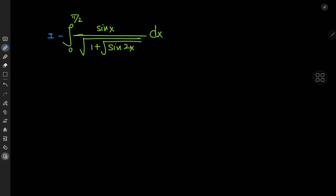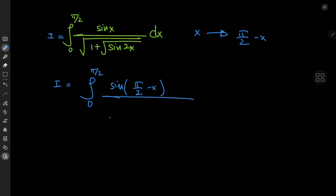I'm going to call the integral I for reference purposes. The phase shift moves from the x world to the π/2 minus x world. So that means I equals the integral from 0 to π/2 of sin(π/2 − x) divided by the square root of 1 plus the square root of sin(2x), since 2 times (π/2 − x) gives π − 2x.